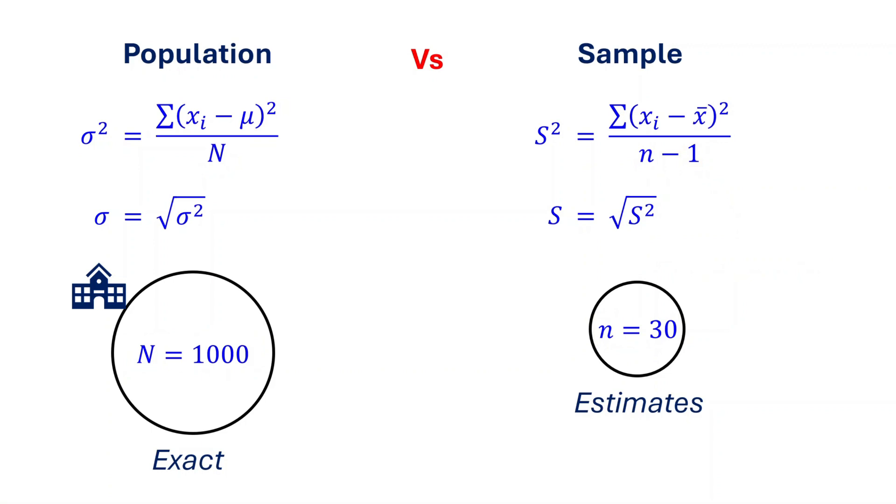So here's the big takeaway. If your data is for the entire population, use the population formula. If your data is for a smaller group taken from a larger population, use the sample formula. Using the wrong formula leads to incorrect results, so keep that in mind.